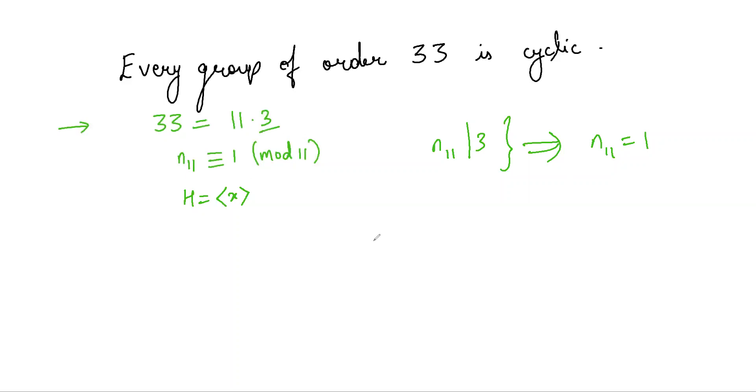Now, since 3 divides 33, there exists an element of order 3 in a group of order 33 by Cauchy's theorem.